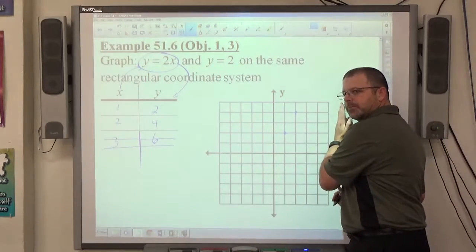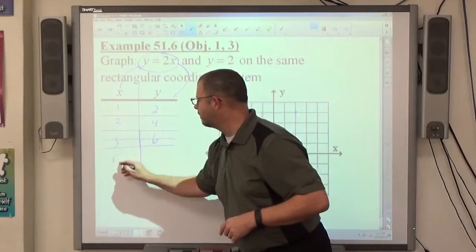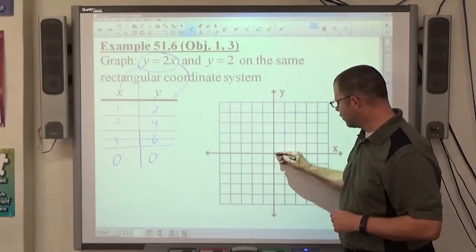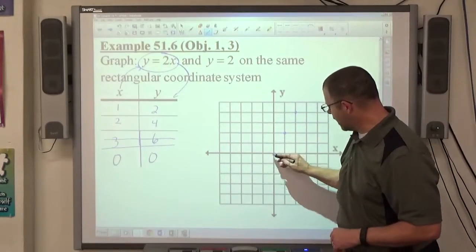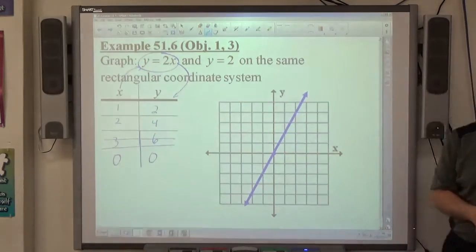So three is too big, right? So go back that way, the next number is zero, right? So let's go zero, what? Zero, zero. Double zero, you get zero. So zero, zero is also a point. So then we connect those dots with a nice straight line like so and there is y equals 2x.